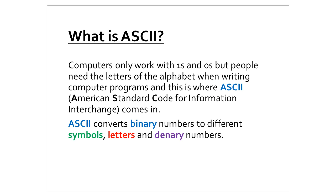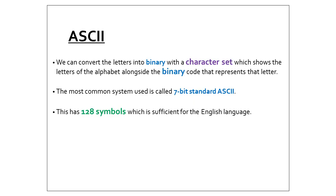ASCII converts the binary numbers into different symbols, letters and numbers — that's numbers 0 to 9. We can convert the letters into binary using a character set, which shows the letters of the alphabet alongside a binary code. The most common one we use is 7-bit ASCII, that's the original one, and this allows 128 letters or symbols.